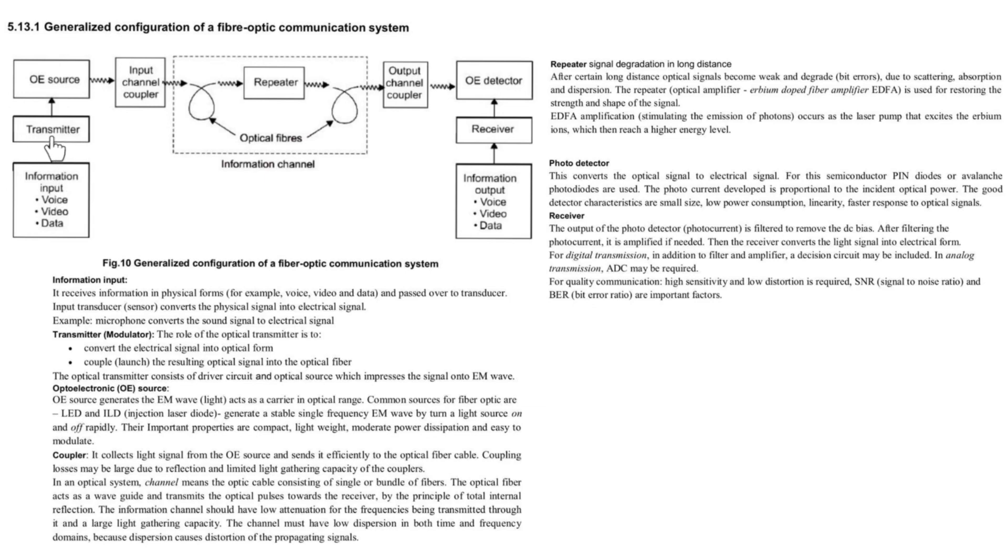The next stage is transmitter, which is also known as modulator. The role of transmitter is to convert the electrical signal into optical form. The electrical signal should be converted into optical form as well as this transmitter has to couple the resulting optical signal into optical fiber. It has to convert the electrical signal into optical form as well as it has to launch the resulting optical signal into optical fiber.